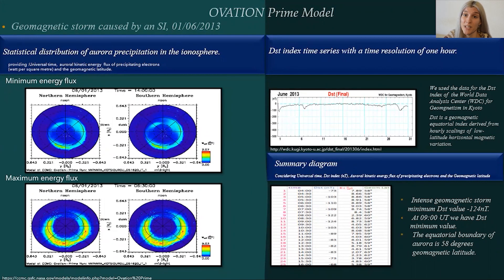On the left, we can see the diagram of statistical distribution of aurora precipitation, which provides universal time or mean kinetic energy flux of precipitating electrons and geomagnetic latitude. On the right, we have the equatorial geomagnetic DST index with a time resolution of one hour.